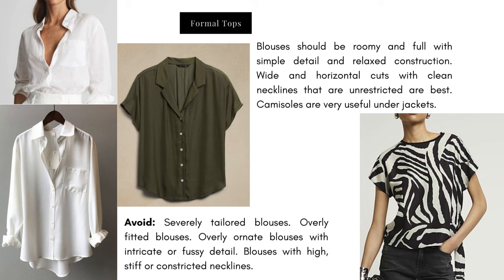Blouses should be roomy and full with simple detail and relaxed construction. Wide horizontal cuts with clean unrestricted necklines are best. These very flowy fabrics and shirts with a sense of movement and ease look wonderful — I can picture each with shorts or a simple pair of jeans as a wonderful easy outfit for the Flamboyant Natural. Pattern in shirts is also beautiful for this type as long as it's not too intricate, sharp, or geometric.